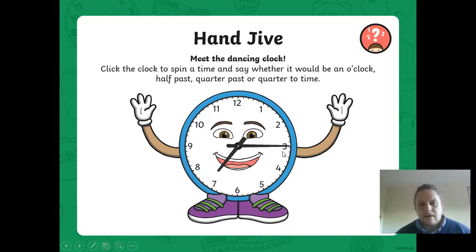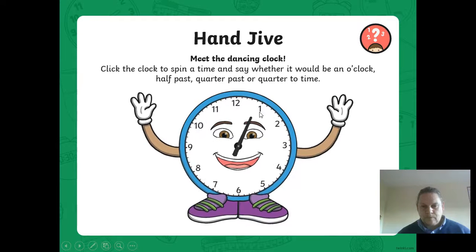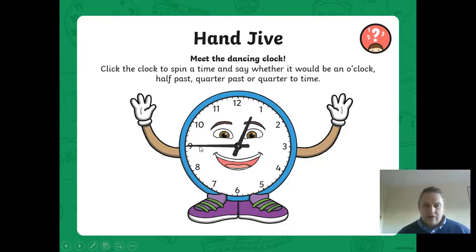See if we can get this next one. Where is the hour hand pointing now? I wouldn't say that's halfway - it's past halfway. It's closer to the one than it is to the 12. So it's going to be quarter-to-one. It's gone past the halfway mark, the hour hand, and it's halfway between the halfway mark and the one. So that's quarter-to-one. Let's see - yes, it's quarter-to-one.